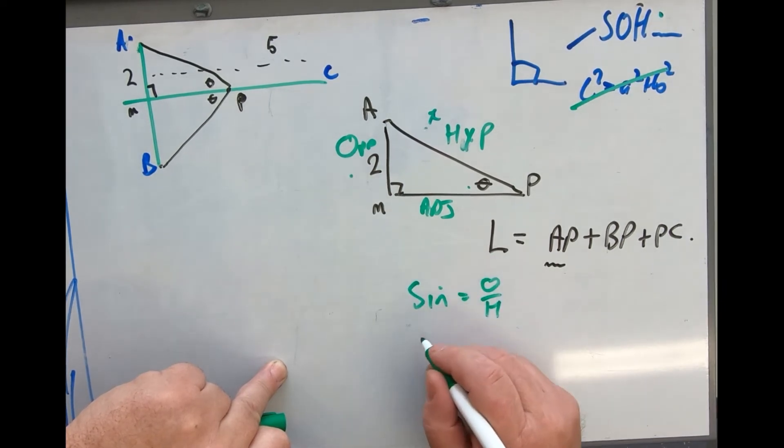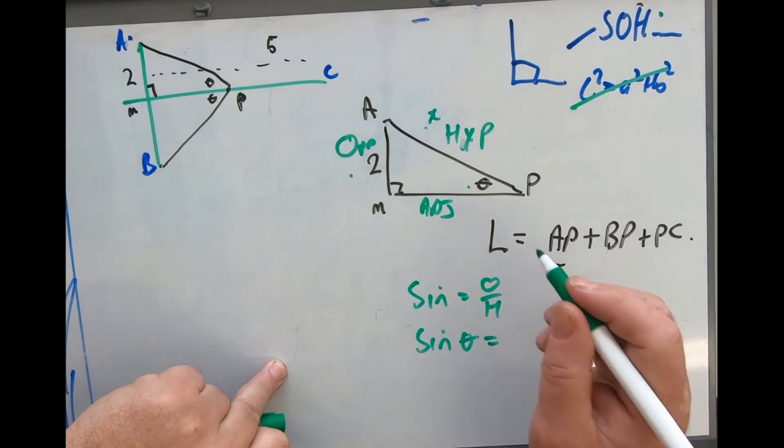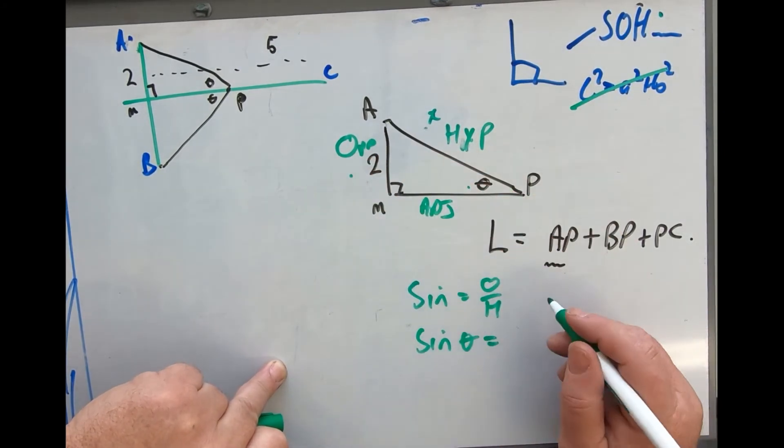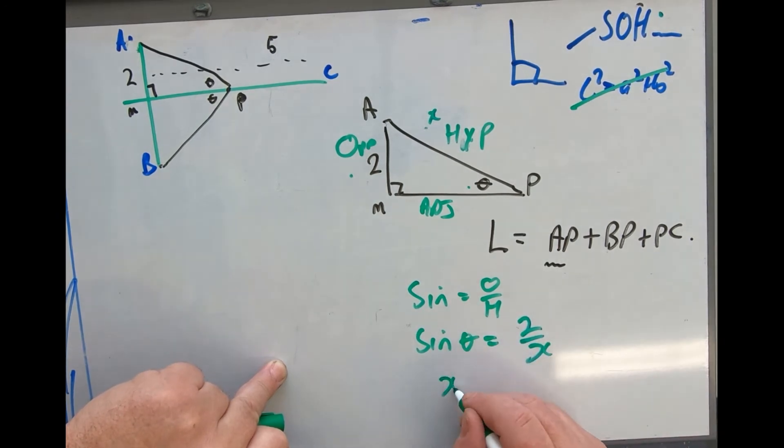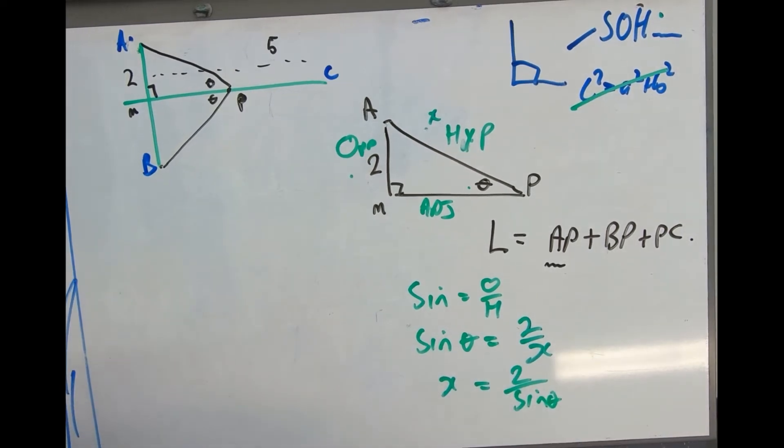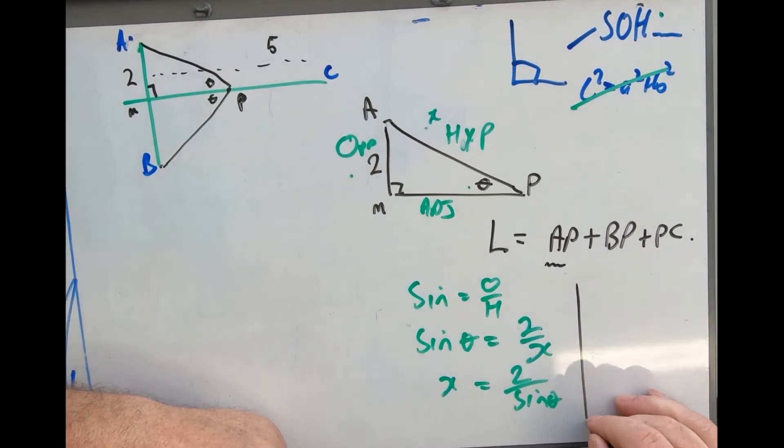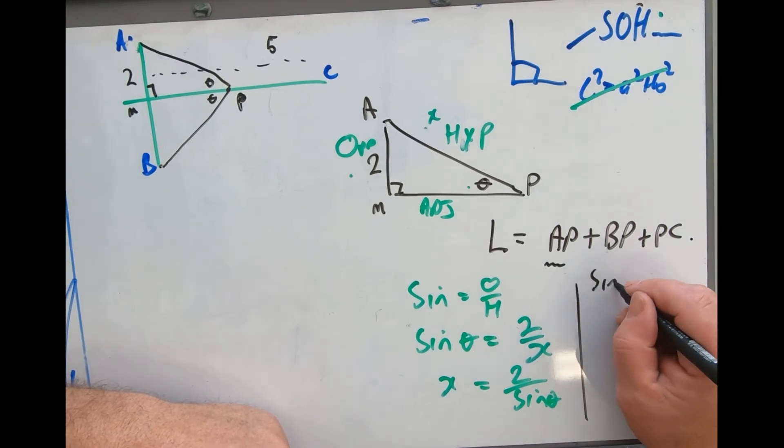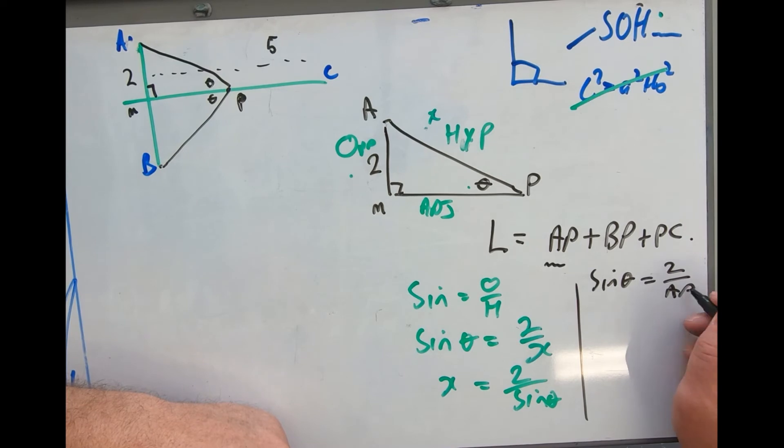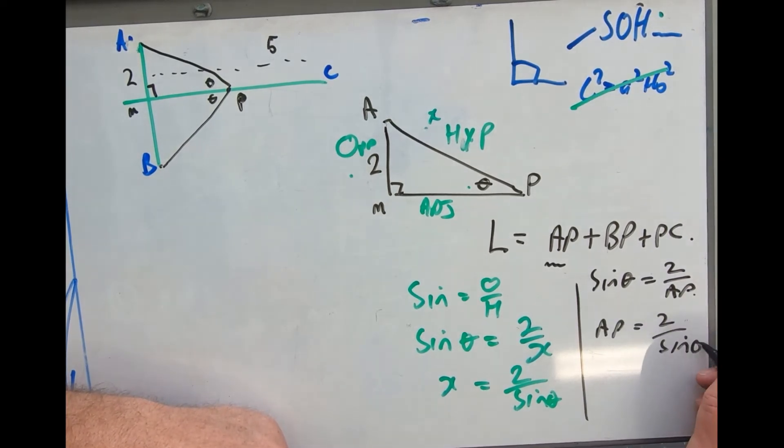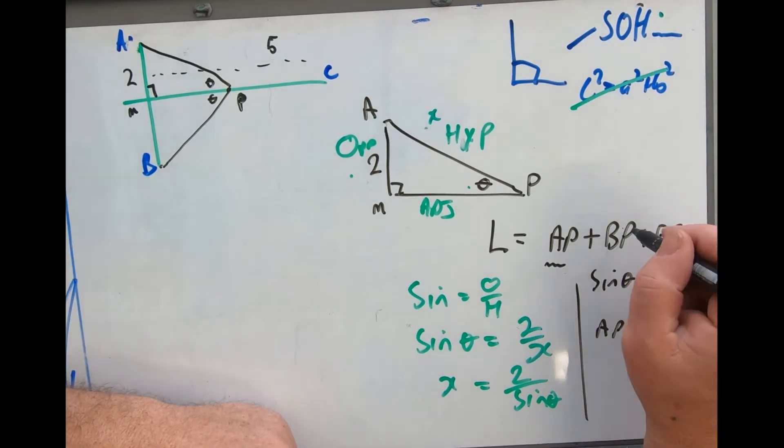To proceed, I need sin equals opposite over hypotenuse. Sin theta equals 2 over AP, so AP equals 2 over sin theta. It's a very similar story for BP.